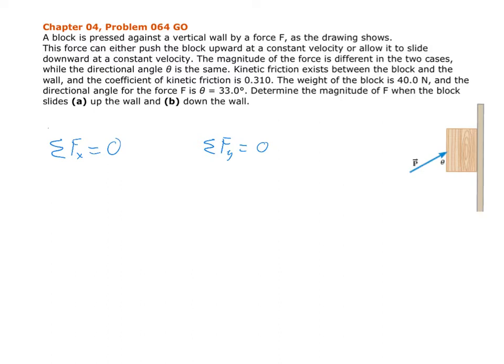So as we read the question, we should be able to list a few things that we're given. We're given that the coefficient of kinetic friction is equal to 0.310. We're given that the block has a weight equal to 40.0 newtons, and we're told that the angle theta that that P force makes is 33.0 degrees.